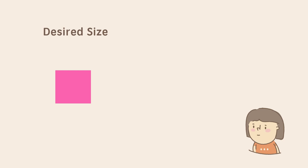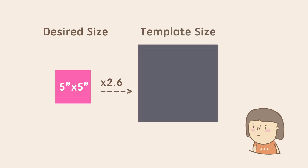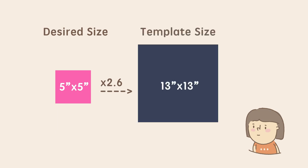Therefore, if next time I wanna create one oven mitt and the desired size is 5 inches by 5 inches, I need to make my template 2.6 times bigger. So my layout will be 13 inches by 13 inches. Remember, the factor will change when the thickness is different, so don't forget to make your own shrinkage sample.